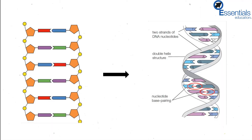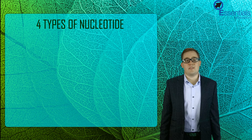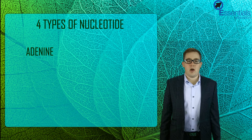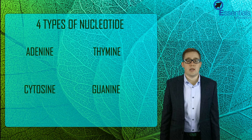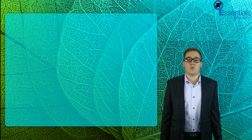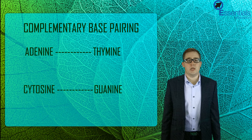These nucleotides join together to make the helical structure we know as DNA. There are four different types of nucleotides found in DNA, and these nucleotides differ only in the type of base they carry. The four types of bases are adenine, thymine, cytosine, and guanine.